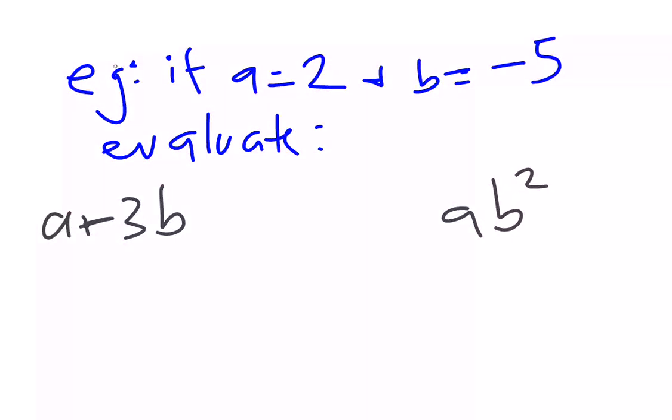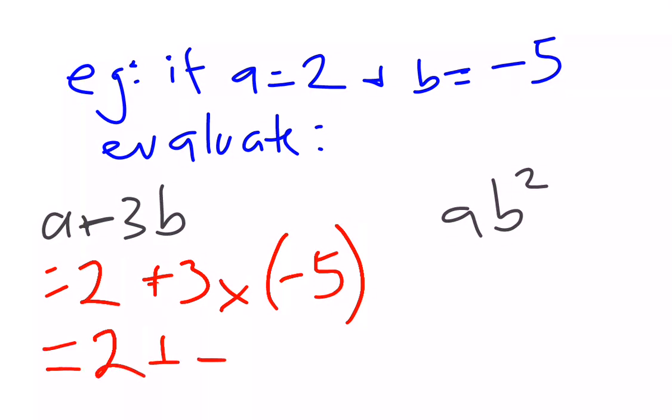To work this out, substitute in the values. a is 2 plus 3. Now 3b is 3 times b, so we write 3 times negative 5. We'll pop that in the brackets just to make life a little bit easier. Making sure that we pay attention to our order of operations, we have 2 plus 3 times negative 5, negative 15, and 2 minus 15, negative 13.